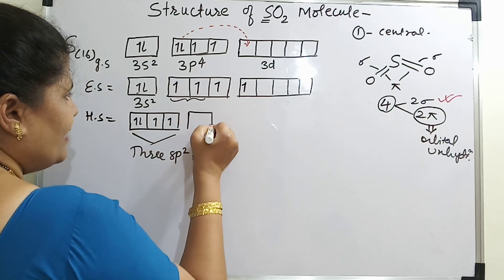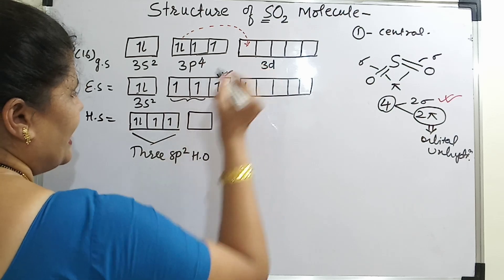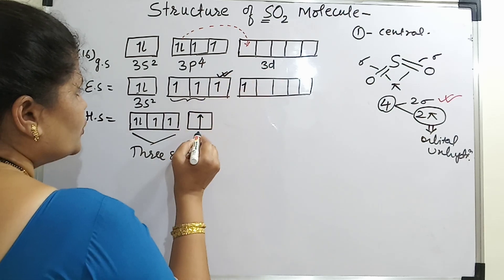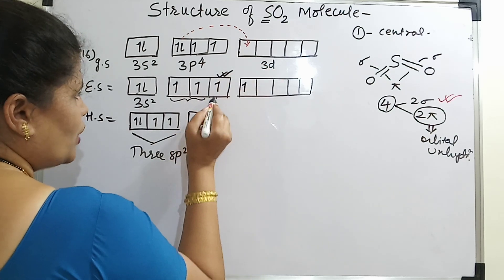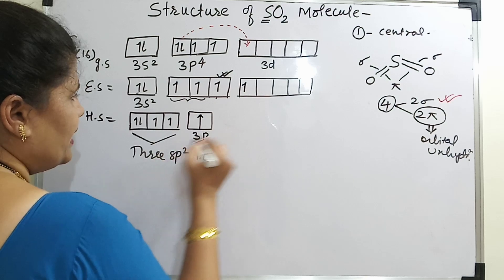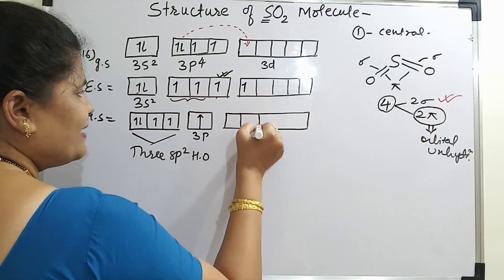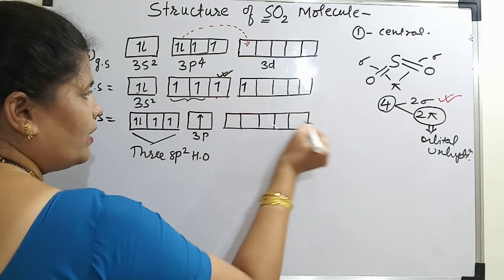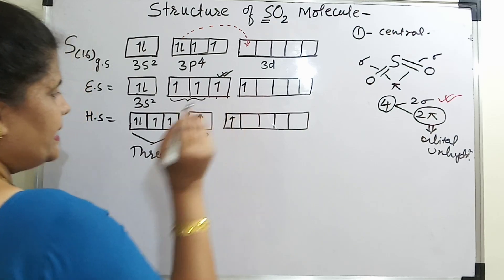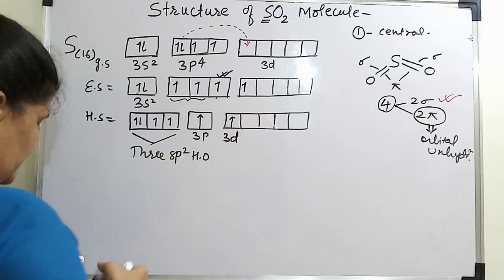Then I will have this one which is not involved in hybridization, which is your 3p. And the 3d — what is remaining here, the rest of the d orbitals are all vacant. So I am interested in this one, which is 3d.